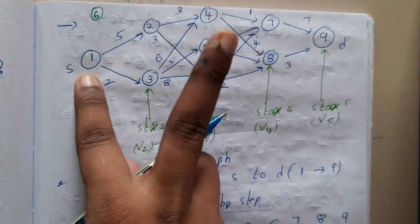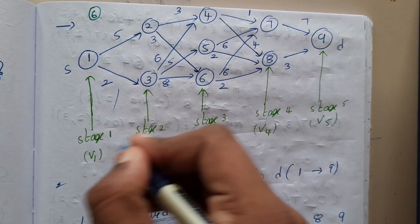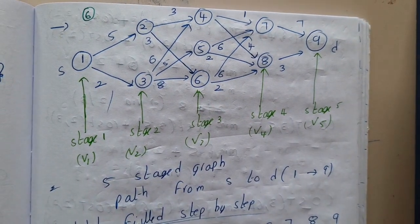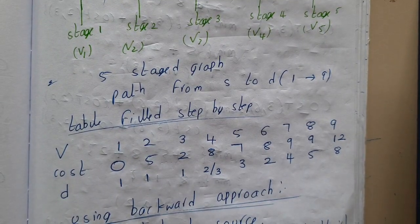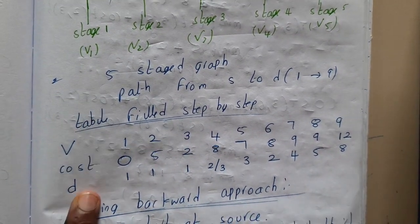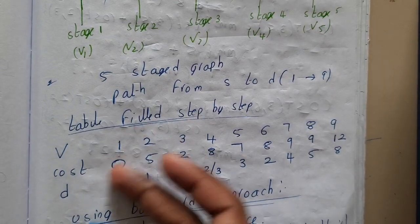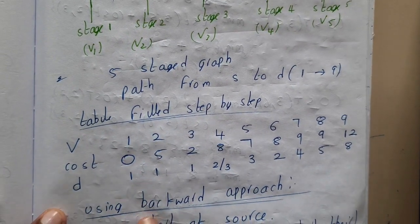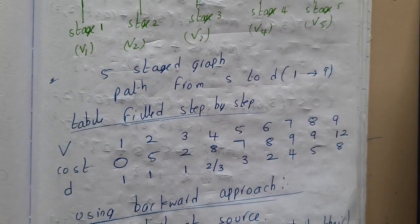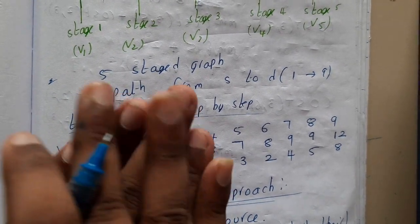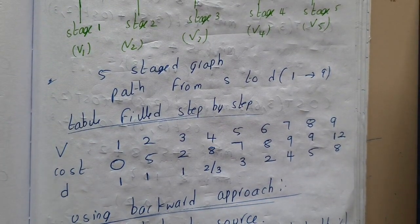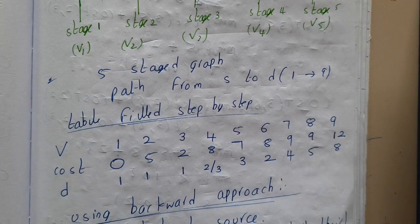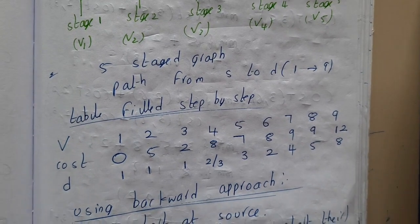The goal of this problem is to find the shortest path from S to D — you need to find both the path and the cost. This also comes under the dynamic programming approach, so we'll use a table to store our results. Regarding the backward approach: you are NOT starting from the destination — you start from the source. If you start from destination, that becomes the forward approach.